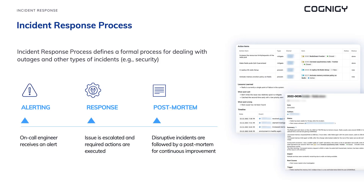Our incident response process starts with an on-call engineer receiving an alert via PagerDuty, a support channel, or another notification system. The process defines escalation and action items depending on the severity of the incident, with the ultimate goal of restoring affected services as quickly as possible. However, this process does not end once the incident is resolved — every incident that causes a disruption and impacts service level agreements is followed by a post-mortem analysis. We store post-mortem reports internally and review them monthly to create a culture of continuous improvement.